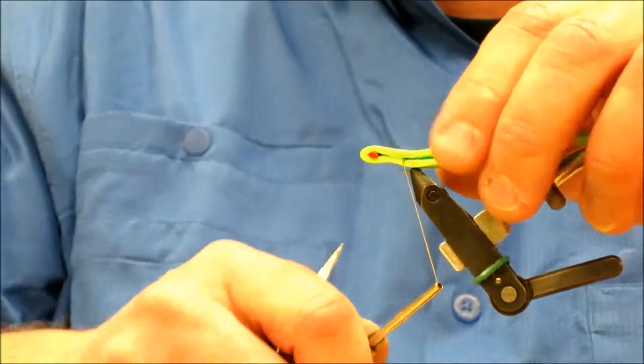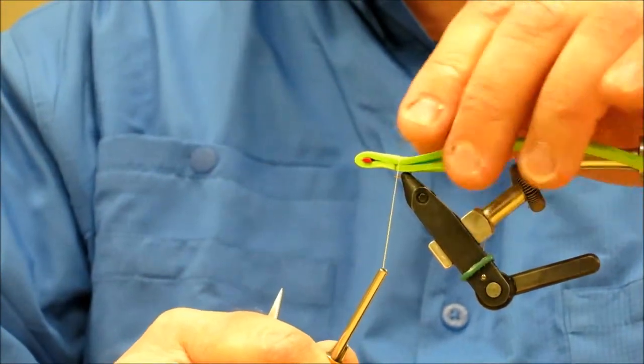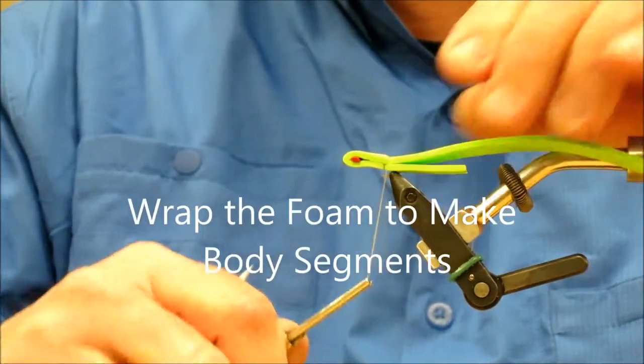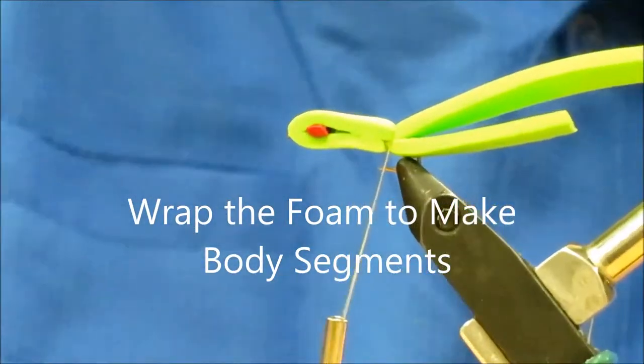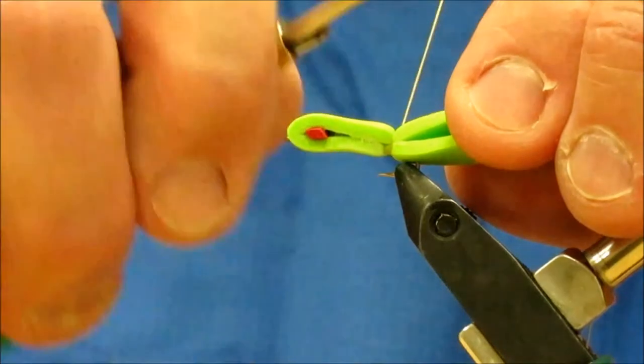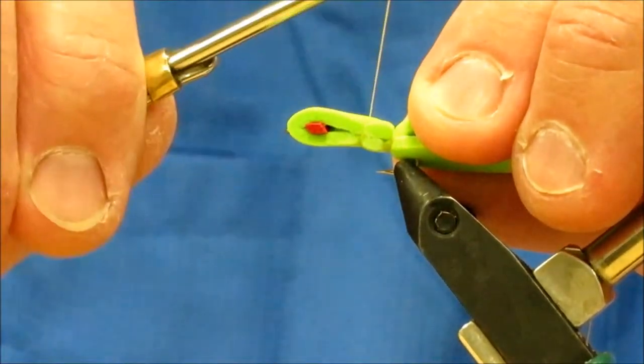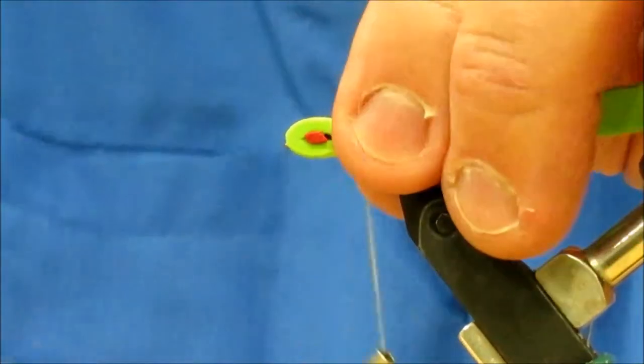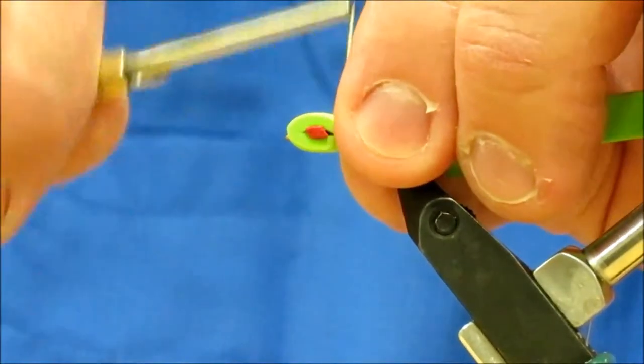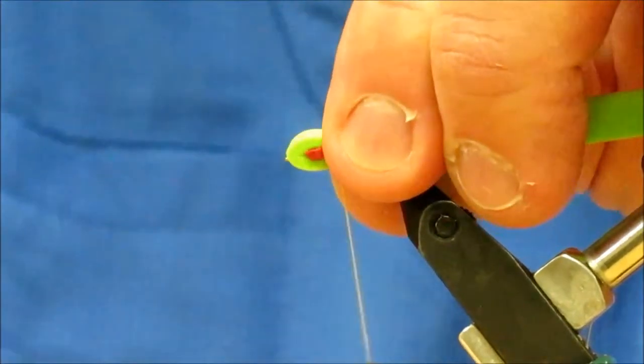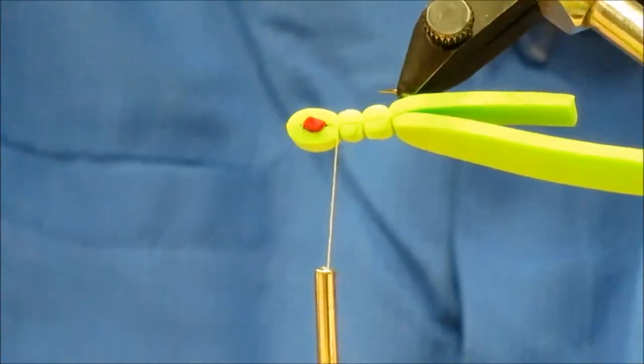When you're done it should look something like that. Then I can come in here and trim my eyes off. I try to leave a little bit sticking out. Now I'm going to take my thread and bring it around. This will be the back part of the body of the hopper. I like to pinch the foam so I don't cut it. I'm going to make two or three wraps to make a segment. Then I'm going to take the thread and go over the top at a forward maybe an eighth of an inch or so and make my next segment.